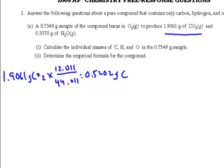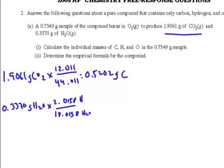So I want to go to the water — the .3370 grams of water — and what I want to find in the water is the hydrogen. The hydrogen is 2.0158 grams per mole divided by 18.0158 grams per mole. That's the part (hydrogen) over the whole (water), same as I did carbon over carbon dioxide. That's going to give me .03771 grams of hydrogen.